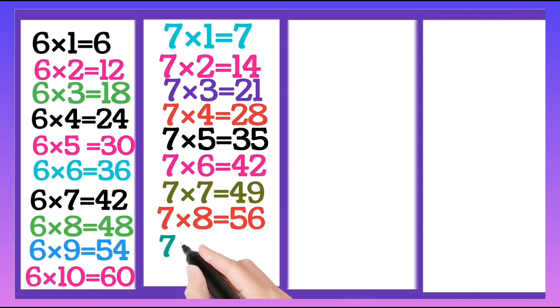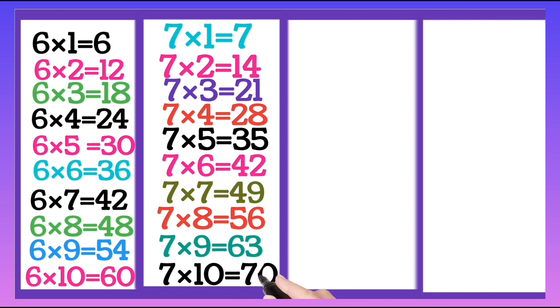7 eights are 56, 7 nines are 63, 7 tens are 70.